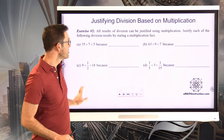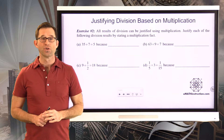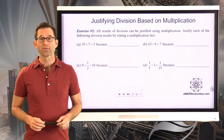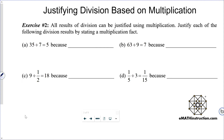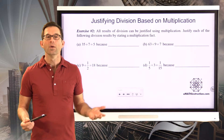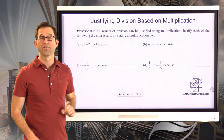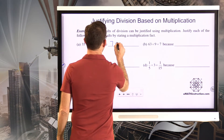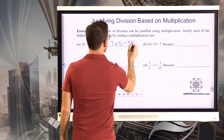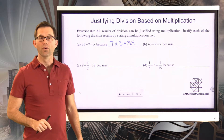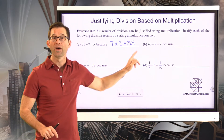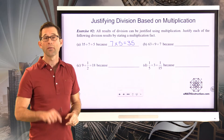All division results can be justified and should be thought of in terms of multiplication. Let's do that in exercise number two: justify each of the following division results by stating a multiplication fact. We know that 35 divided by 7 is 5. Why? Because 7 times 5 is 35. Think about each one of these and write down a multiplication sentence or equation that justifies each quotient. Take a moment and go ahead and do so.